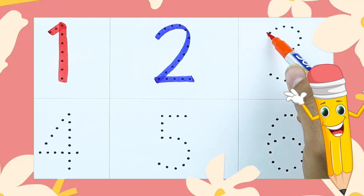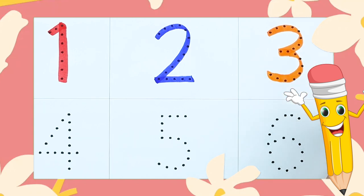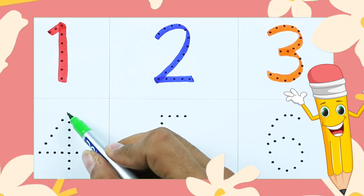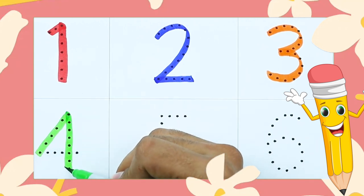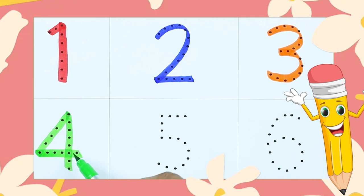It's number 3, yes, 3 is with orange color. It's number 4, with green color. It's number 4.